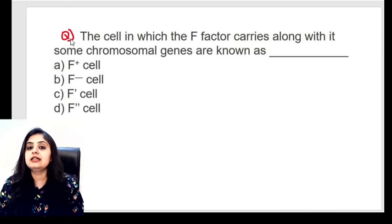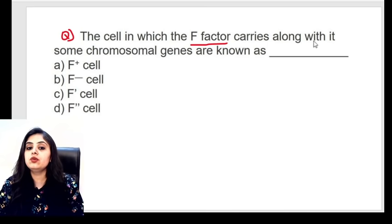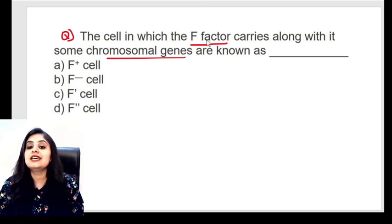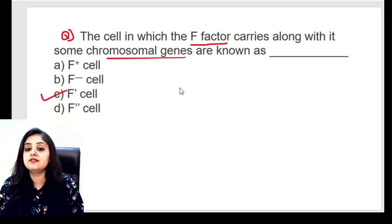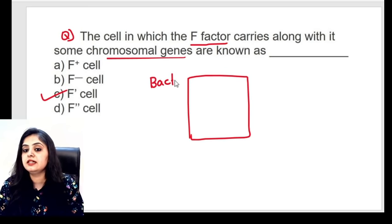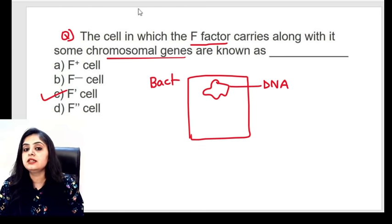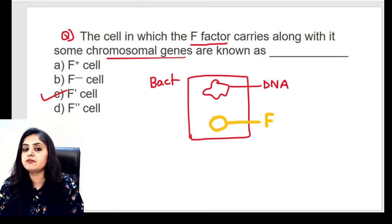Question 3: The cell in which the F factor carries along with it some chromosomal genes — what is it called? This is an F prime cell. When the fertility factor (plasmid) splits away from the main DNA and carries a bit of chromosomal DNA with it — that is the F′ cell. The fertility factor possessing chromosomal genes is called F prime.